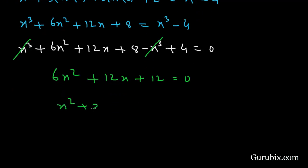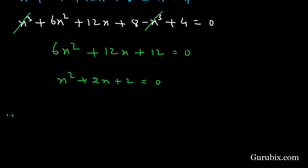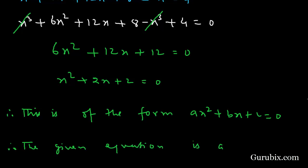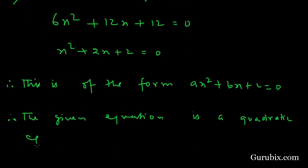We observe that x² + 2x + 2 = 0 is of the form ax² + bx + c = 0. This means the given equation is a quadratic equation. This is the solution of the example. Thank you.